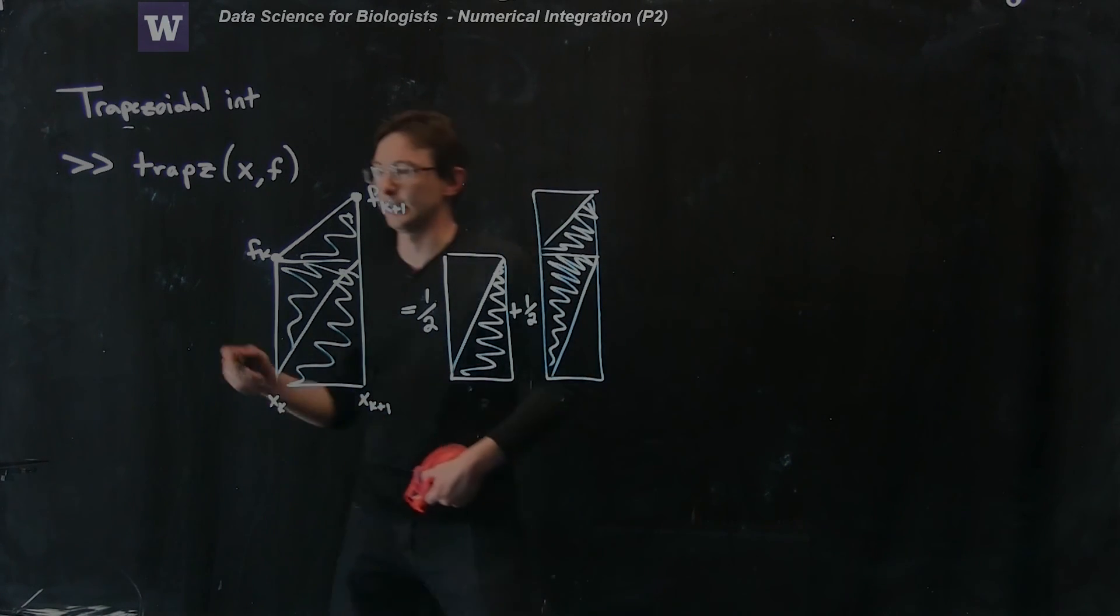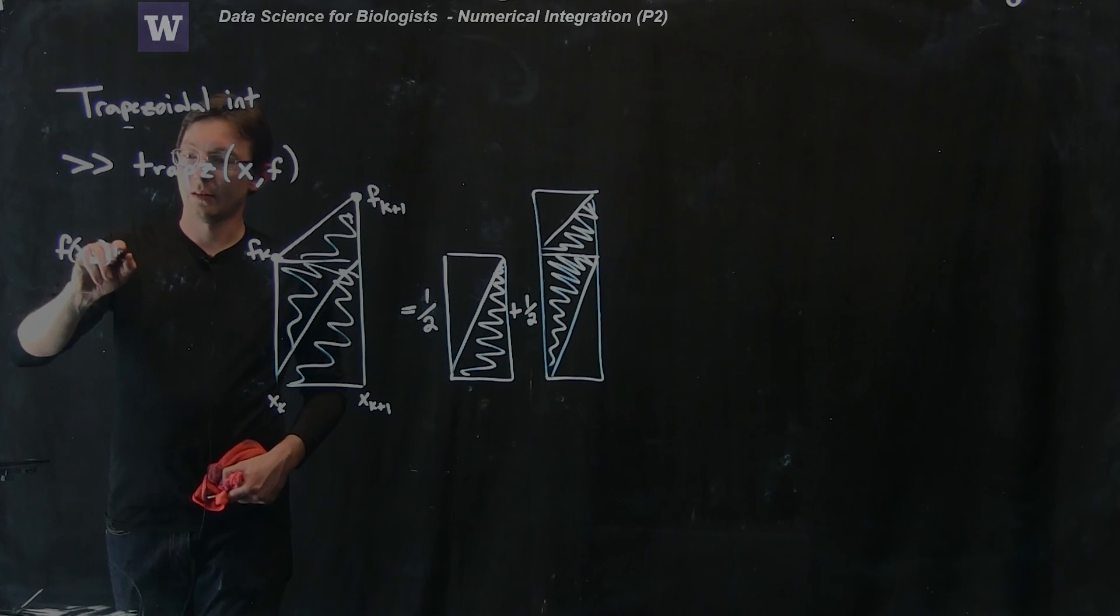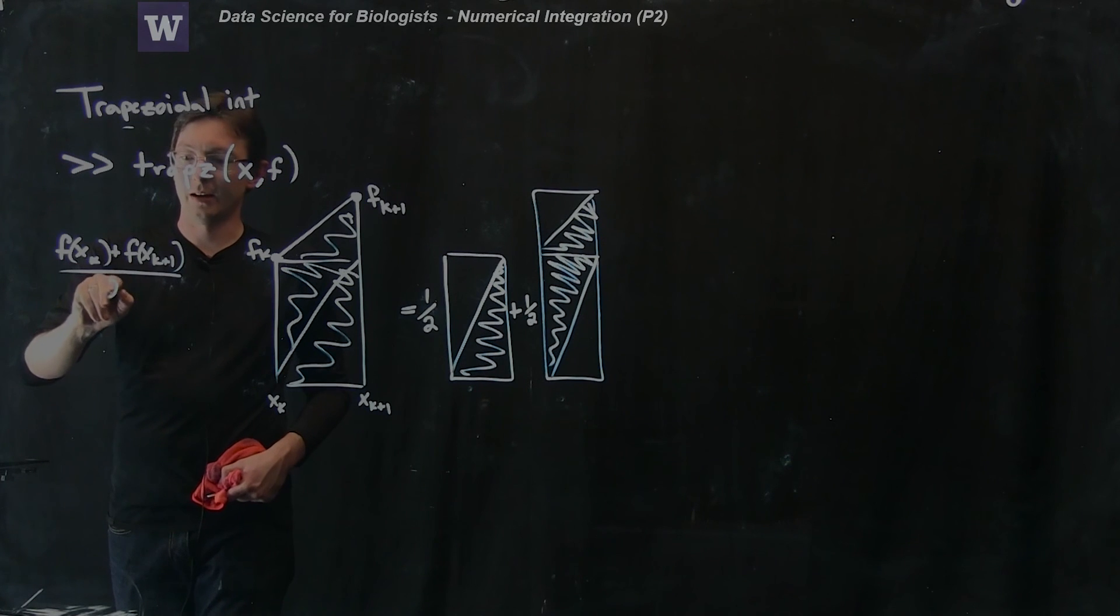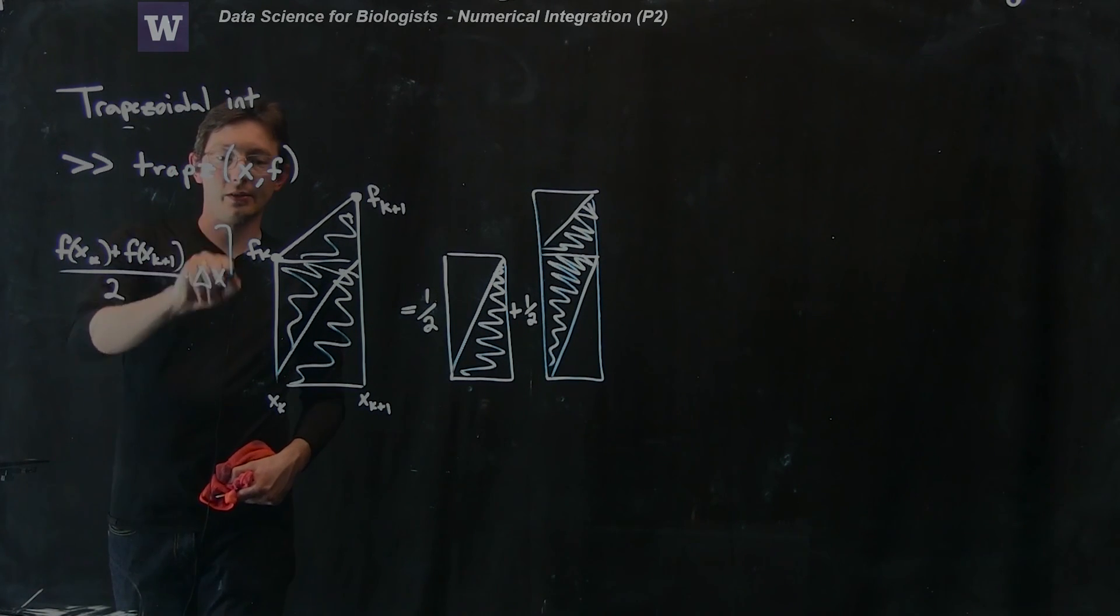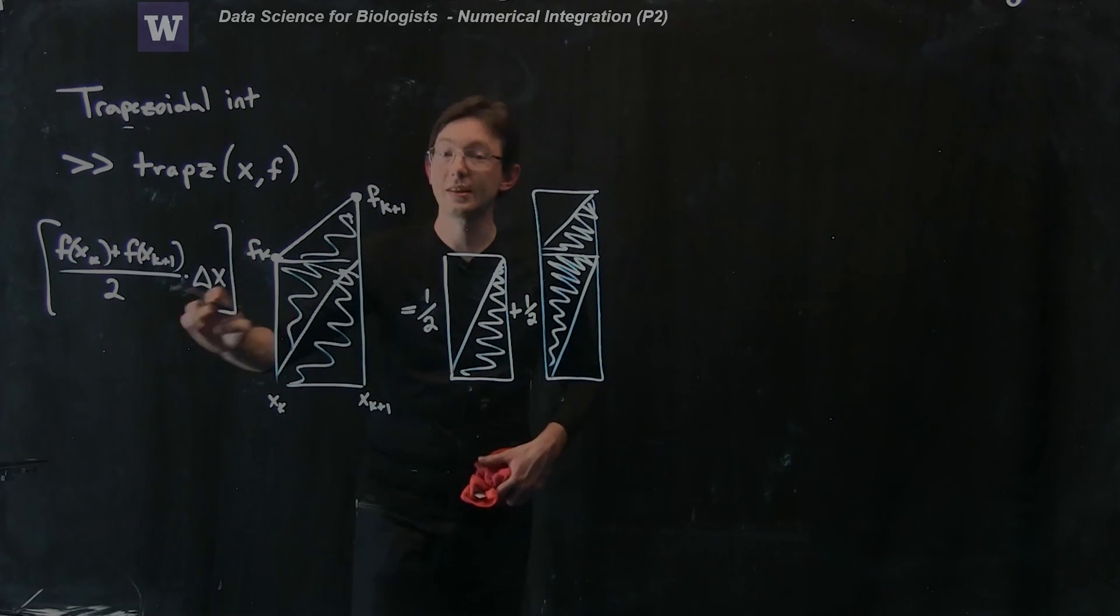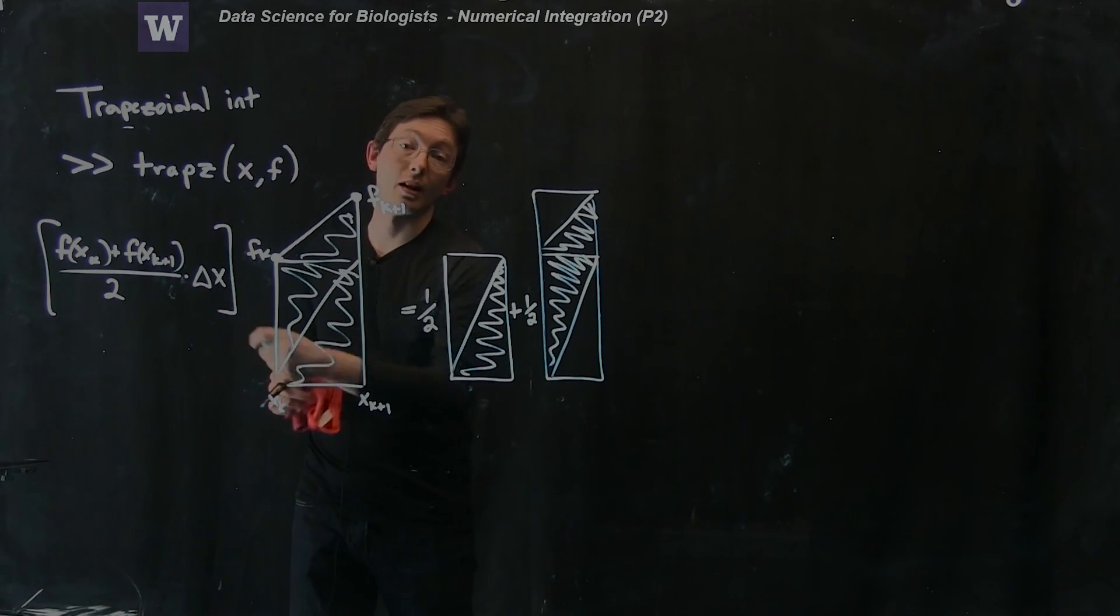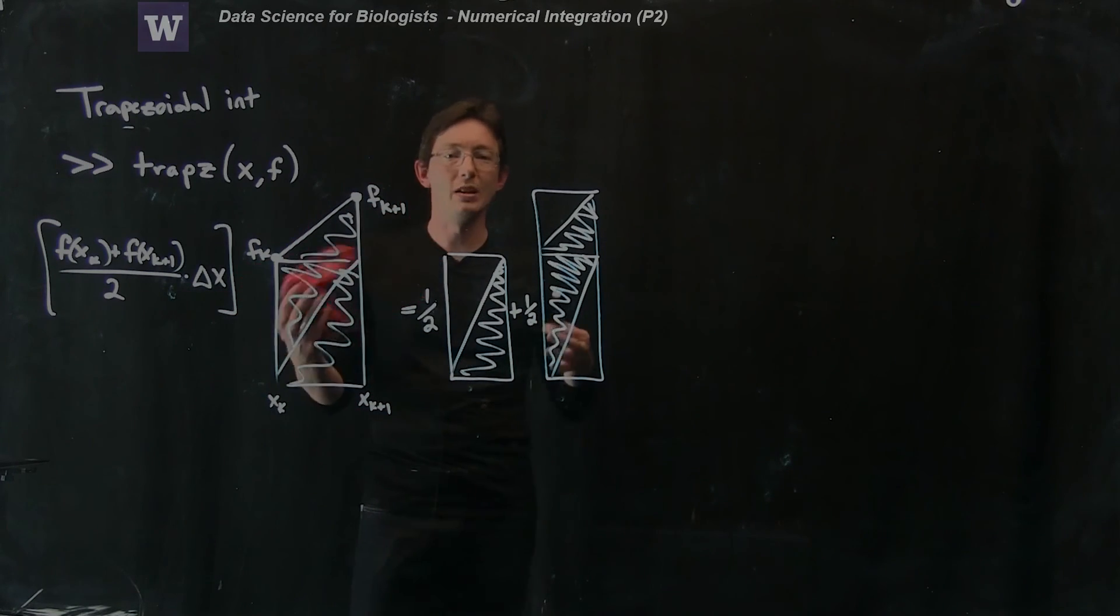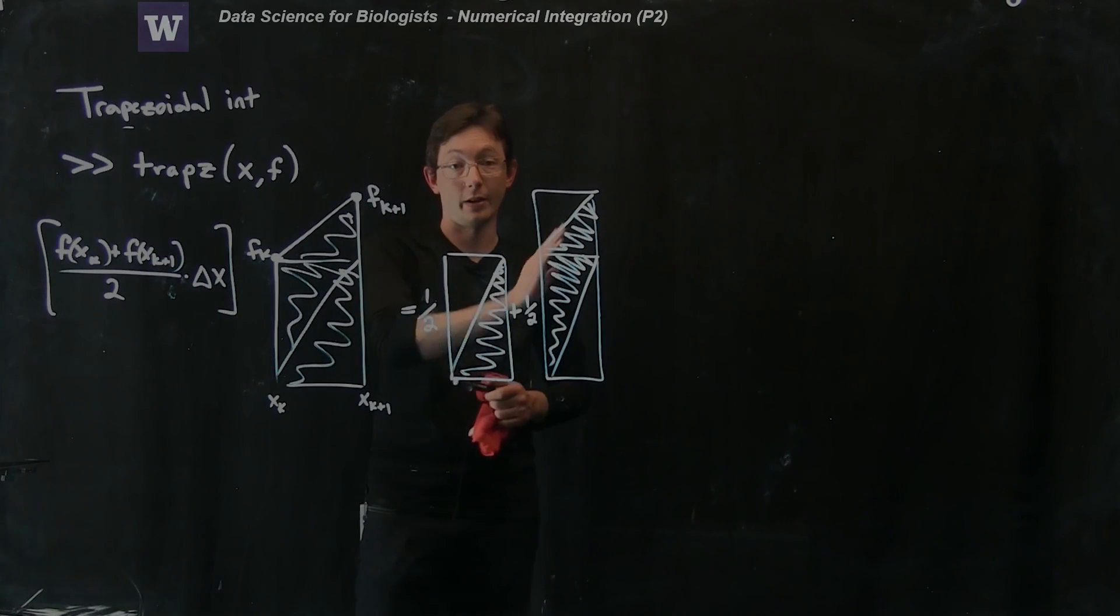So what I have here is f of xk plus f of xk plus 1 divided by 2 times delta x. This is the area of my new trapezoid. We can use this instead of rectangles in our Riemann sum, and this is going to be a lot more accurate. This will be better in delta x. If you have a relatively big delta x, this will be more accurate than the rectangle rules.